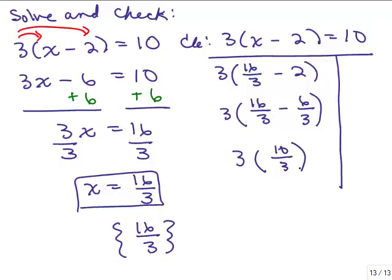I've simplified inside the parentheses. Now we do the multiplication: 3 times 10 thirds — the 3s cancel — so I end up with 10 on the left-hand side of the equation. On the right-hand side it's already simplified: I have 10. So when I plugged in 16 thirds, both sides were the same number. That was the correct solution to this problem.